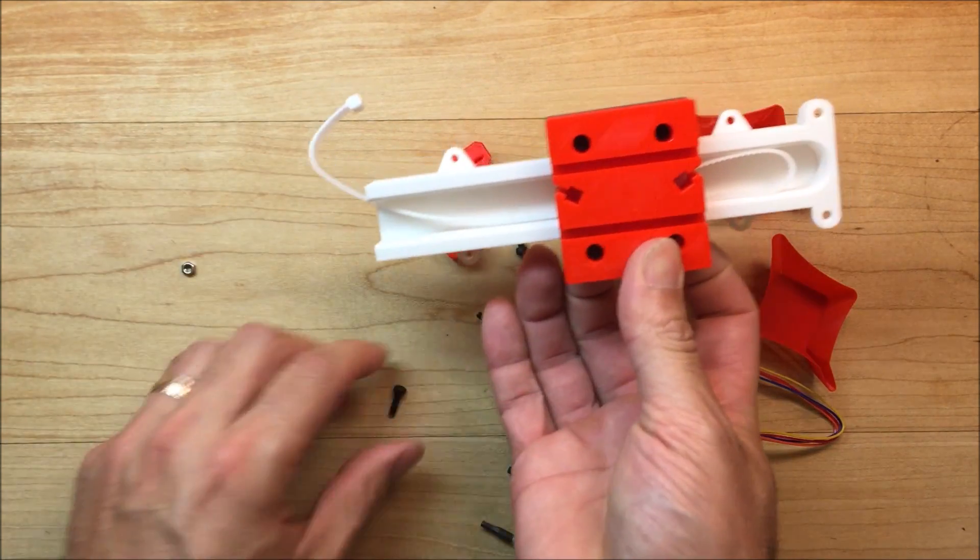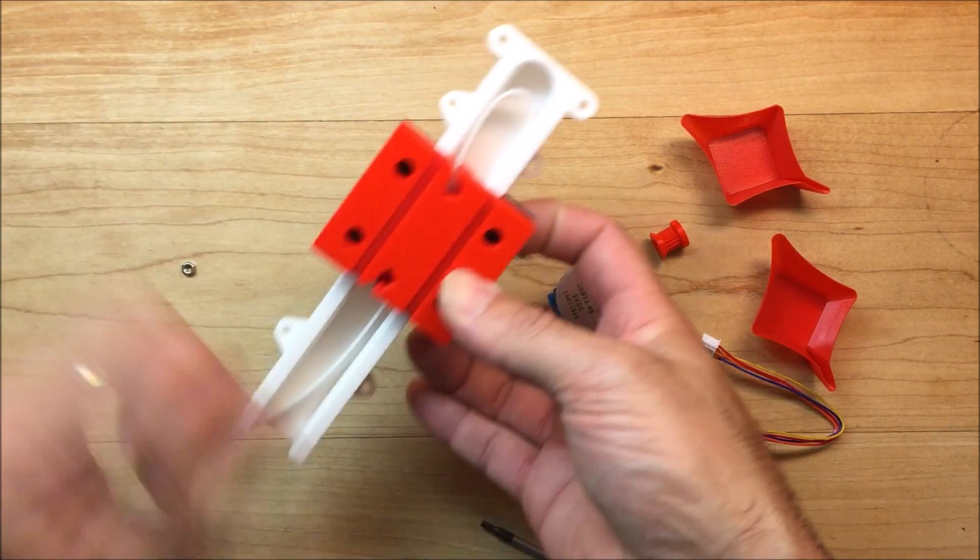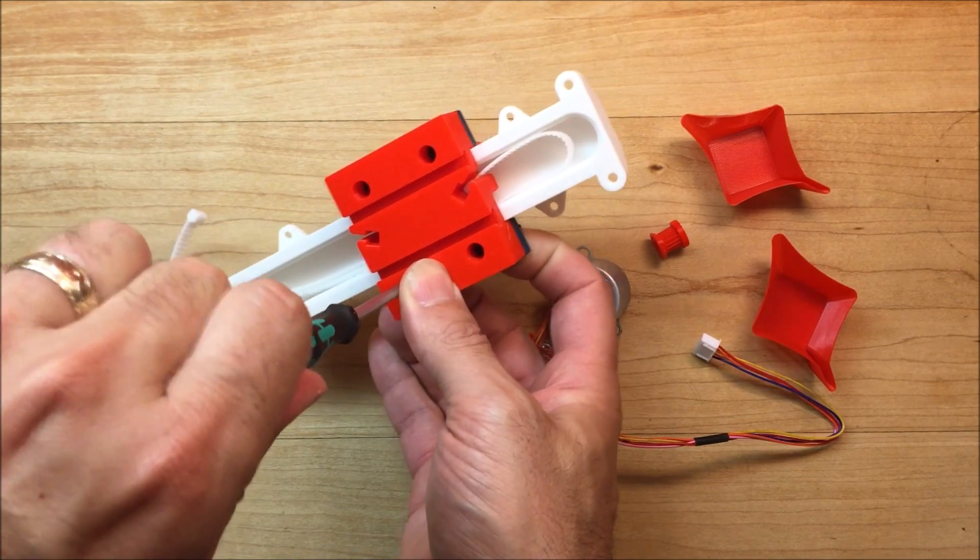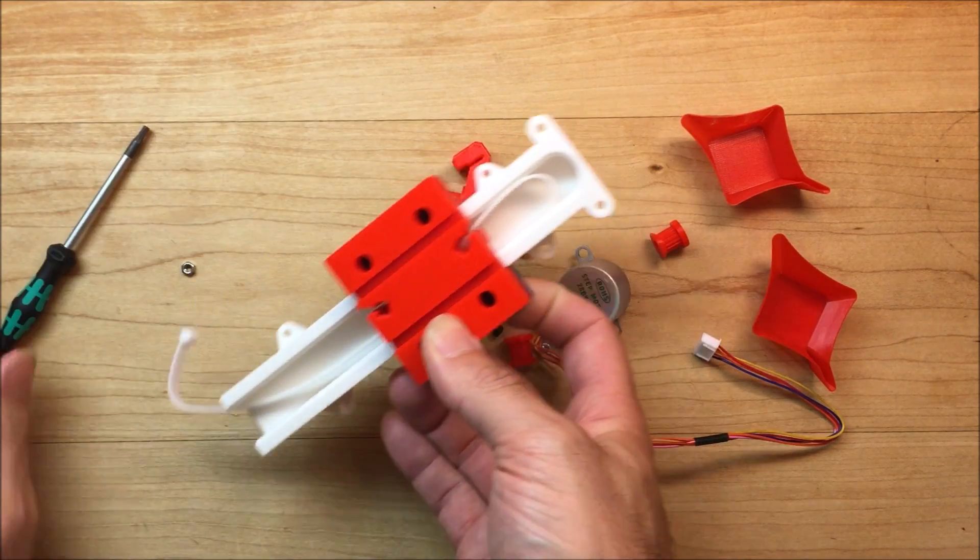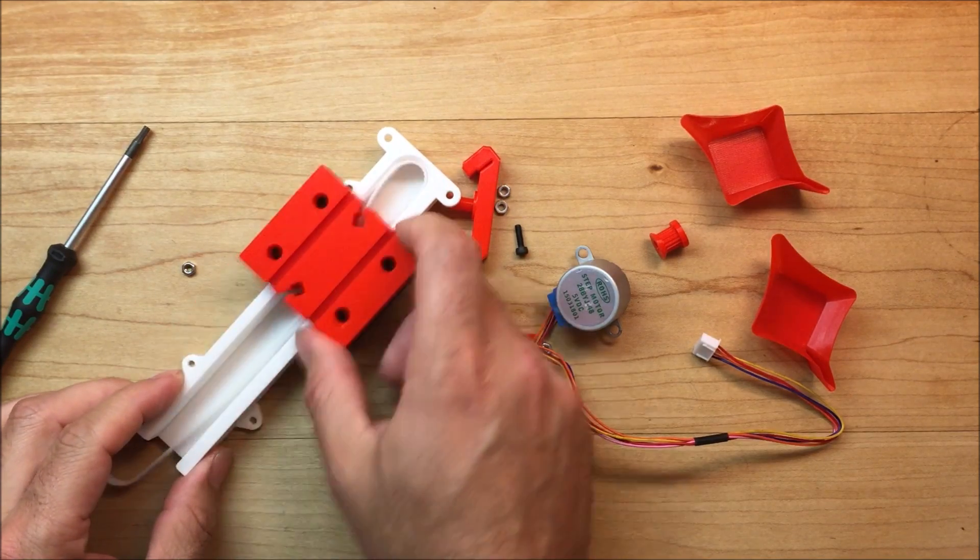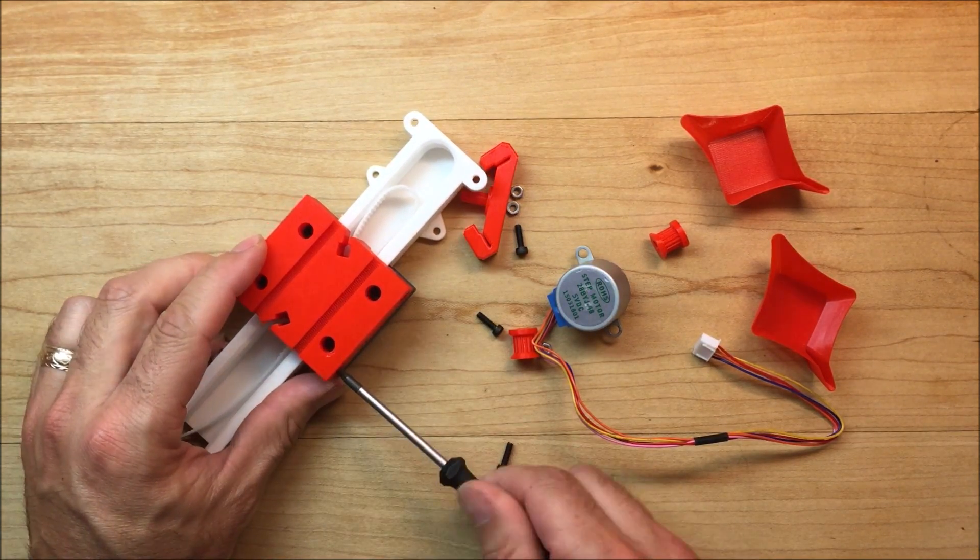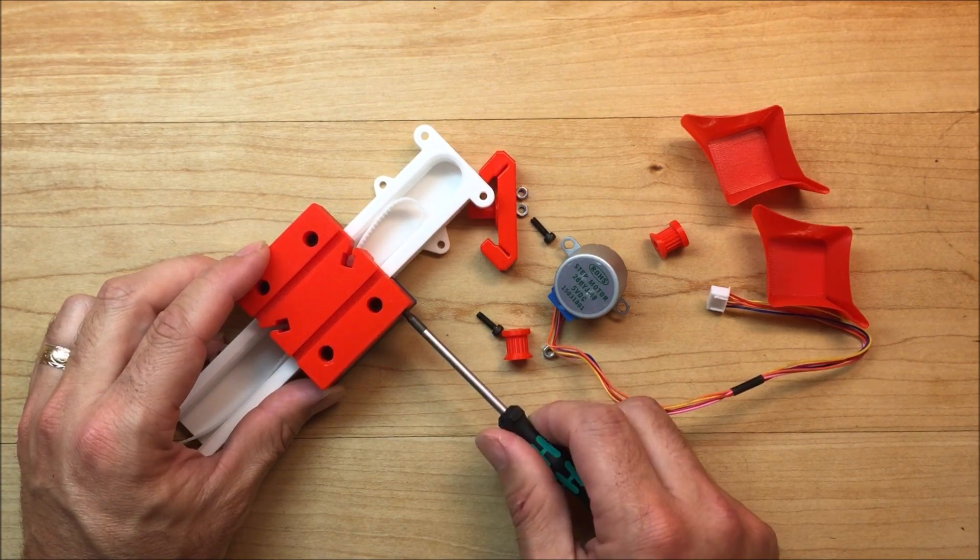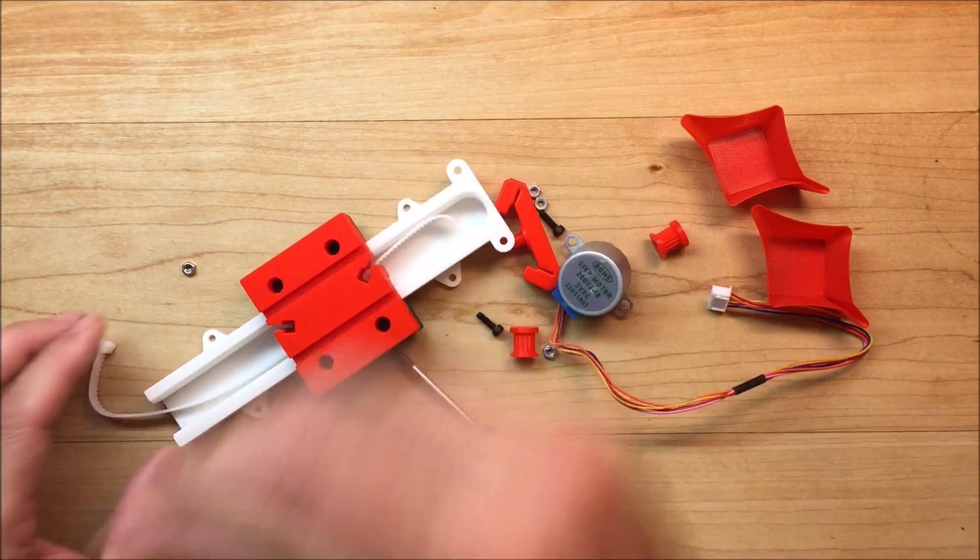Just be careful not to allow the carriage to run off the rail because your balls will fall out. All right, once you have this done you should be able to move the carriage and then adjust the preload until it feels right. Feels pretty good.